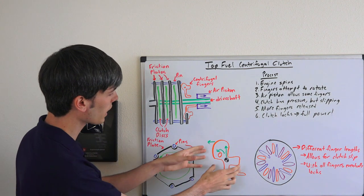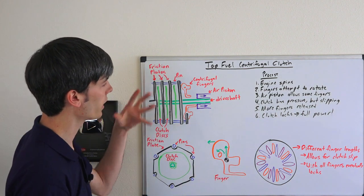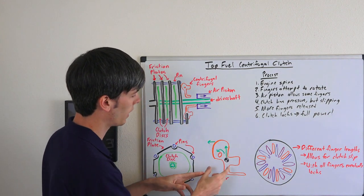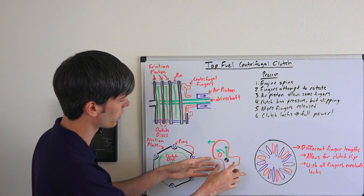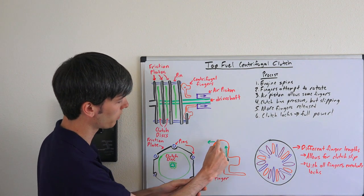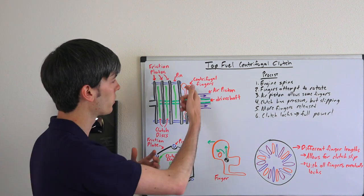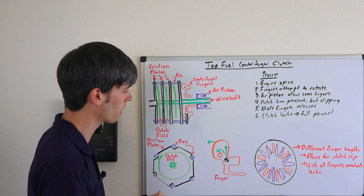Looking at this finger, as our engine starts to spin up what it's going to do is be applying this centrifugal force to these involuted fingers, these centrifugal fingers. I say involuted because that'll be the shape of it, much like a gear tooth, and that's simply so they can always apply, always have contact with the friction disk.